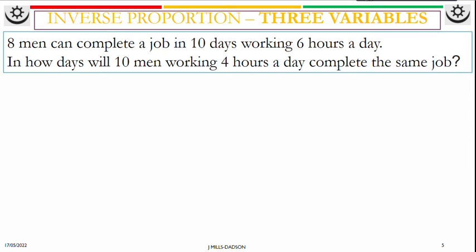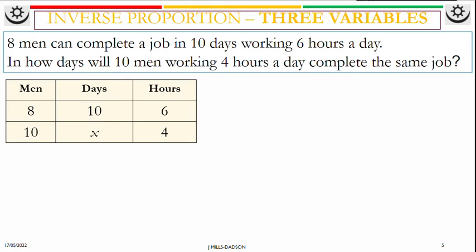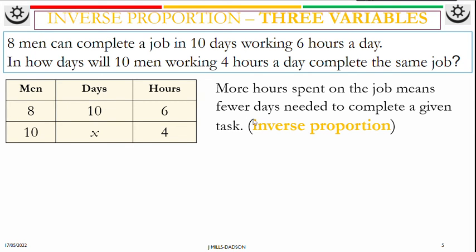Now let's look at where we have inverse proportion for three variables. Eight men can complete a job in 10 days, working six hours a day. In how many days would 10 men working four hours a day complete the same job? This particular question was actually explained during lesson three. But we're using the equation coefficient method. This time let's see arrow method. So we put your information into a table. Men, days and hours. We don't know days. So we call it x. Let's see how this will relate to hours and men. More hours spent on a job means fewer days needed to complete a given task. That's inverse. So days and hours inverse. So up, down.